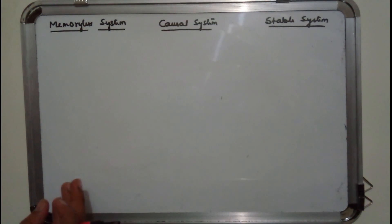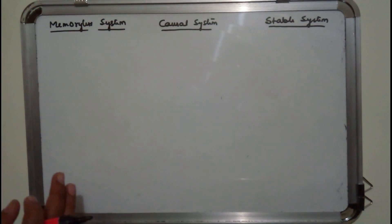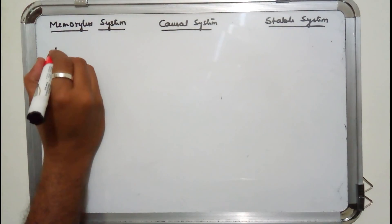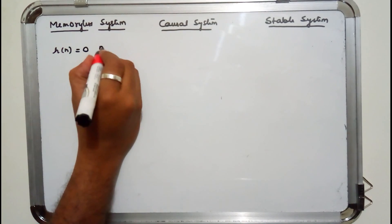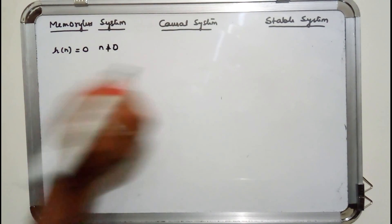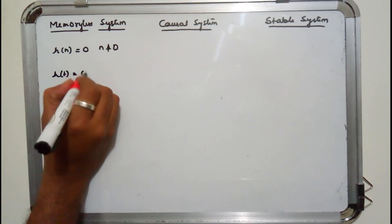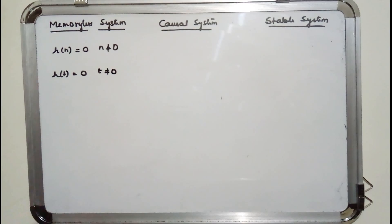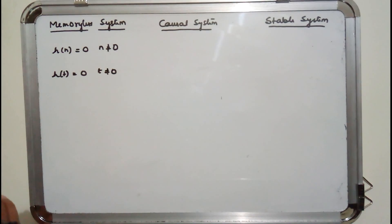A system is said to be memoryless if its impulse response satisfies this condition: h[n] must be zero for n not equal to zero for the discrete case, and for the continuous case, h(t) must be zero for t not equal to zero. If these two conditions are satisfied, then the system is called a memoryless system.